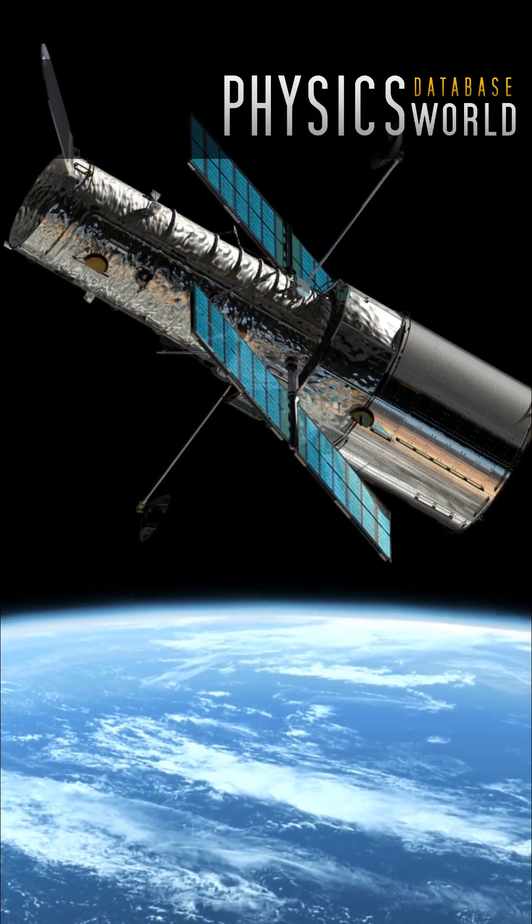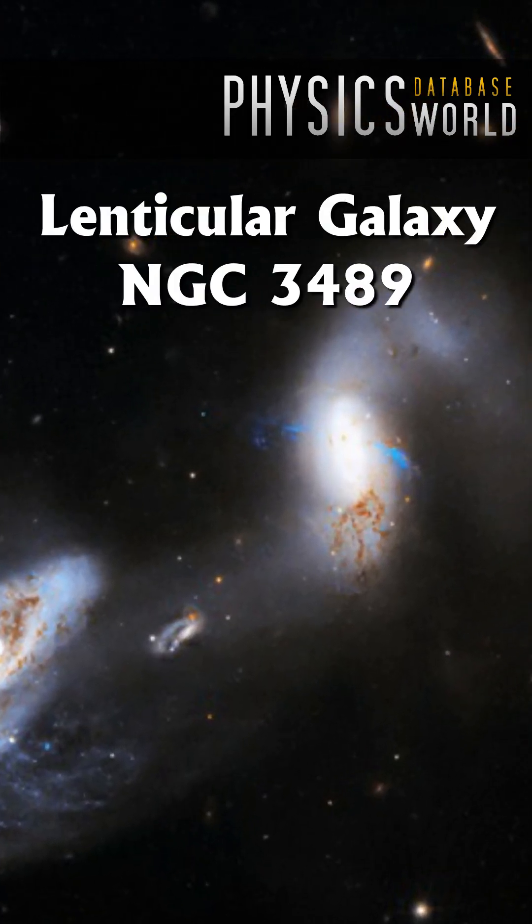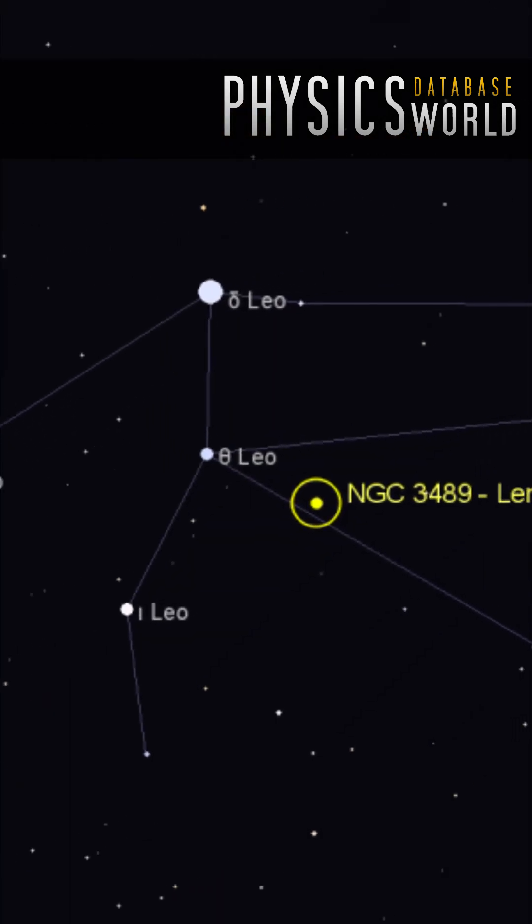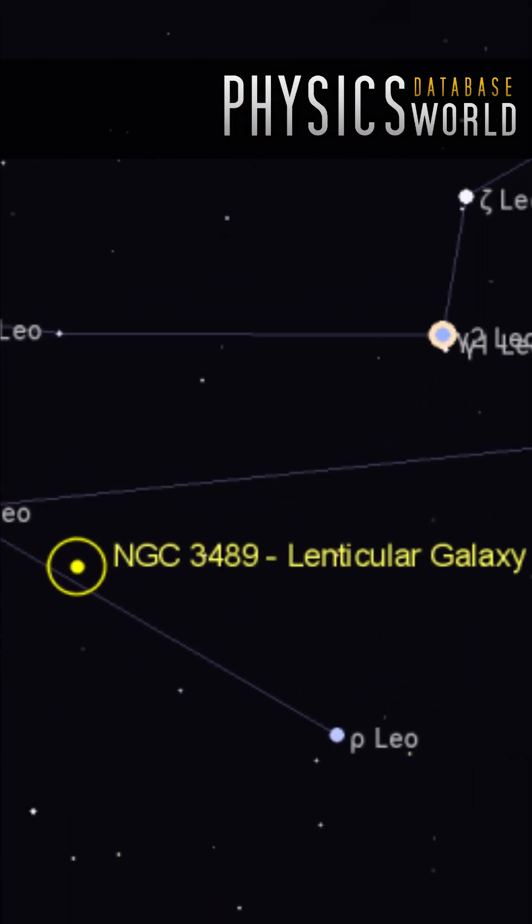The Hubble Space Telescope recently captured this captivating image of the lenticular galaxy NGC 3489, located some 30 million light-years away in the constellation Leo the Lion.